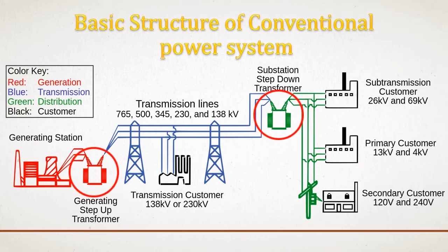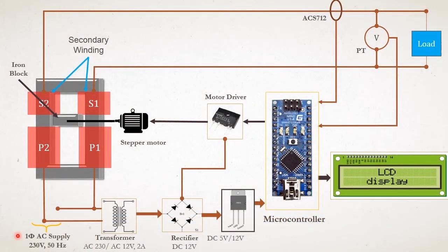The current limiting transformer is one part of that power system. This is the block diagram of the fault current limiting transformer. Let's see the constructional details of our transformer.